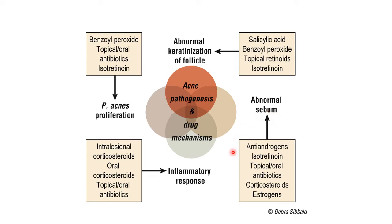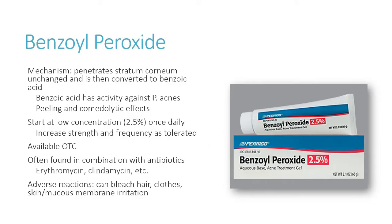For abnormal sebum production, anti-androgens can come into play. When I say androgen, think testosterone and dihydrotestosterone. Giving anti-androgens can help. We talked about spironolactone — it's an anti-androgen, which is why we saw gynecomastia in men. As an anti-androgen, it can sometimes be used for acne. Anyway, we're going to go through all these different drug classes and how they're used to manage acne. The first one is benzoyl peroxide — most patients have probably tried this before coming to see you.